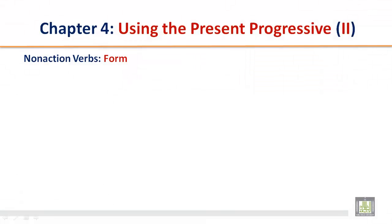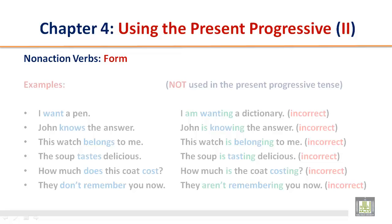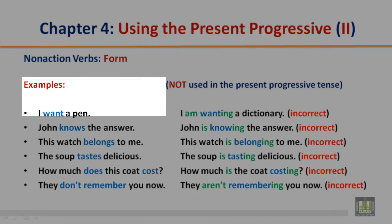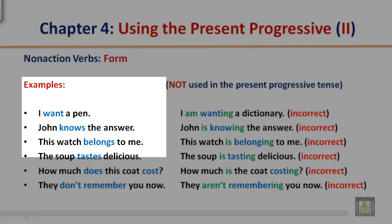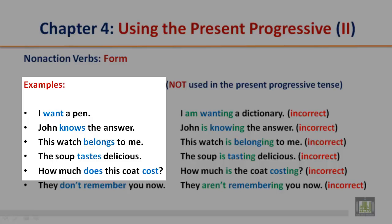Non-action verbs form — correct examples: I want a pen. John knows the answer. This watch belongs to me. The soup tastes delicious. How much does this coat cost? They don't remember you now.